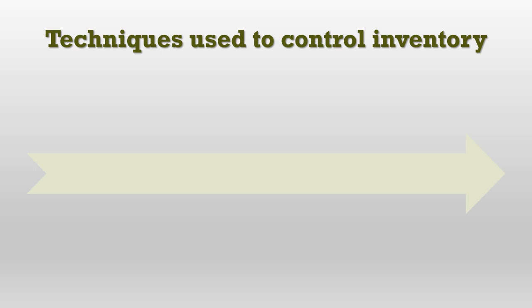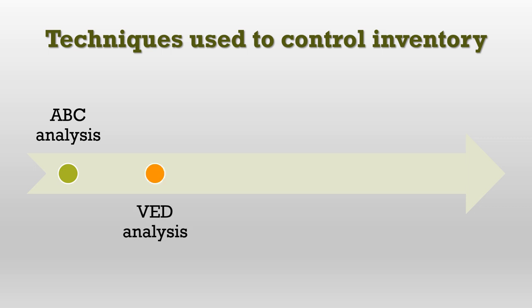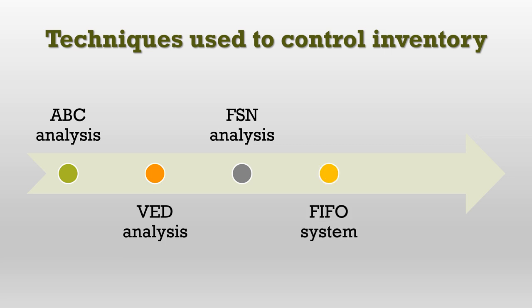There are various techniques used to control inventory, such as ABC analysis, VED analysis, FSN analysis, FIFO system, and lastly, economic order quantity. Other methods also exist, but these are the most important and easy to use for controlling inventory.